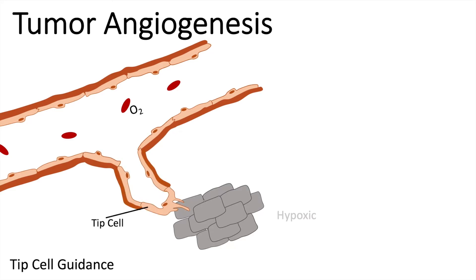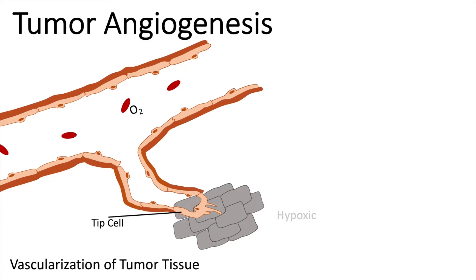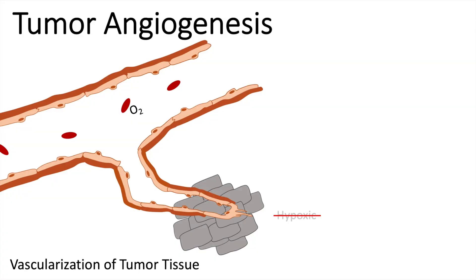In the end, due to the hypoxic factors released by the tumor tissue, a new blood vessel is formed. The vascularization of the tumor tissue supplies the tumor with oxygen and glucose. The environment is no longer hypoxic, and unfortunately that means the tumor can grow.